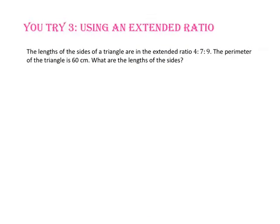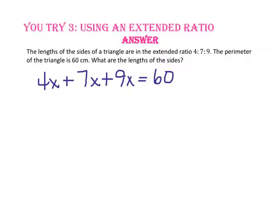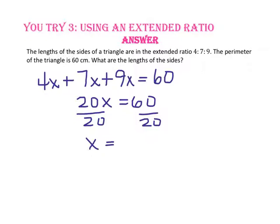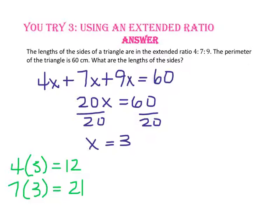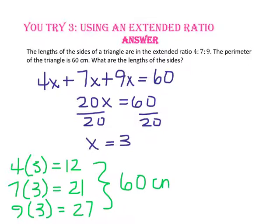Pause the video and do you try number 3. The lengths of the sides of a triangle are in the extended ratio 4 to 7 to 9. The perimeter of the triangle is 60 centimeters. What are the lengths of the sides? Let's start with our equation of 4x plus 7x plus 9x equals 60. Combine like terms and 20x will equal 60. Divide both sides by 20 and x will equal 3. So 4 times 3 gives us a length of 12 centimeters, 7 times 3 gives us 21 centimeters, and 9 times 3 gives us 27 centimeters. Adding the three lengths gives a sum of 60 centimeters, so we know we are correct.